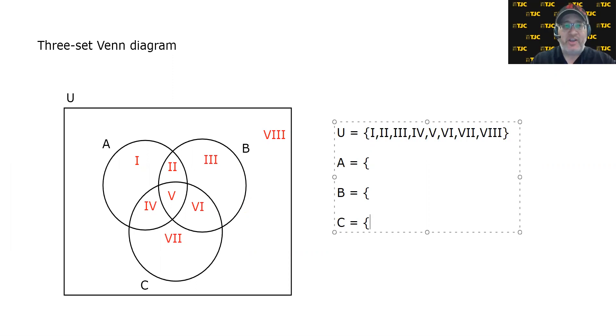I want you to pause the video for a second and see if you can quickly identify the regions that make up sets A, B, and C. In other words, which Roman numerals are in which circles? Hopefully you pause the video and give it a try, but here we go.